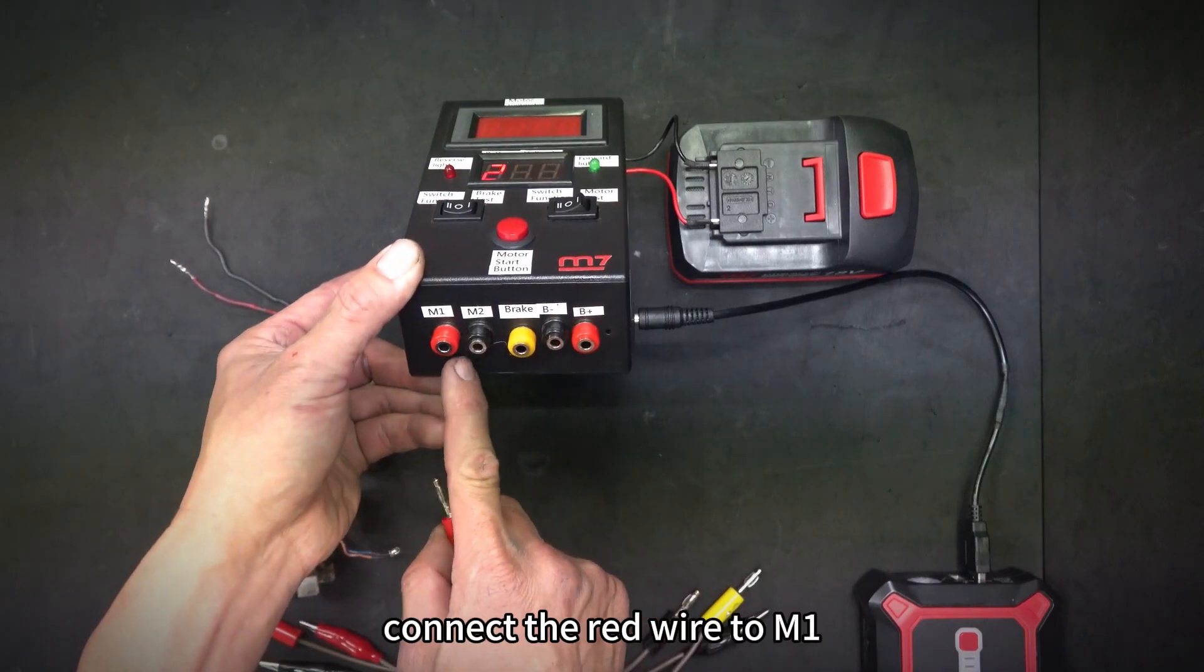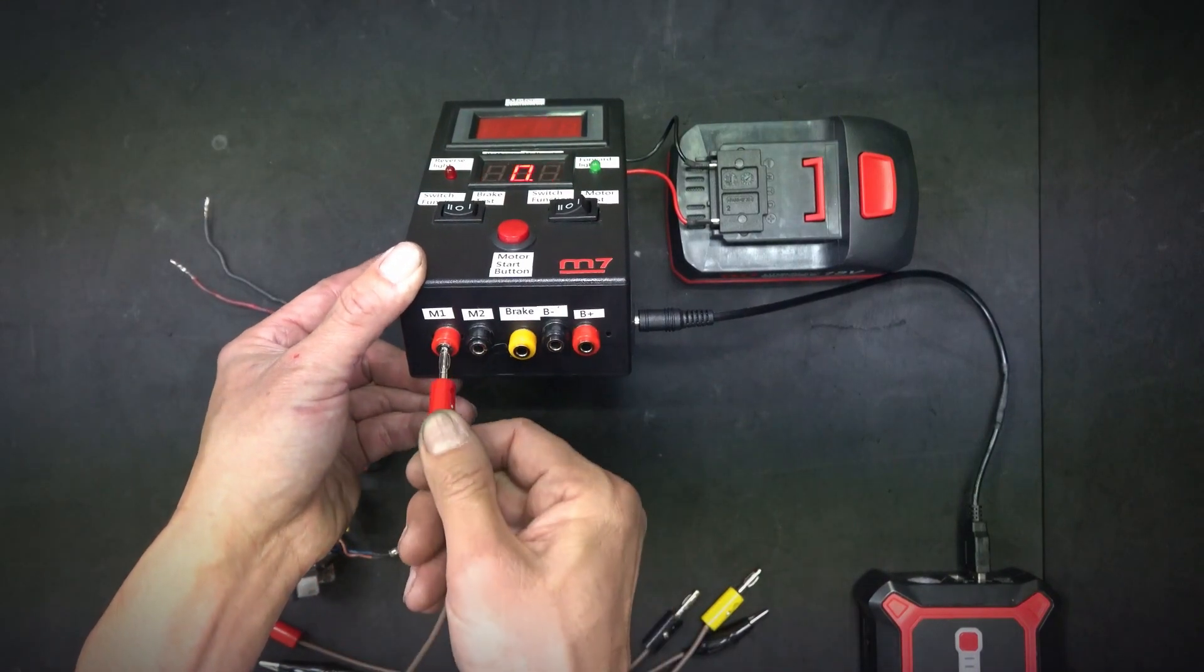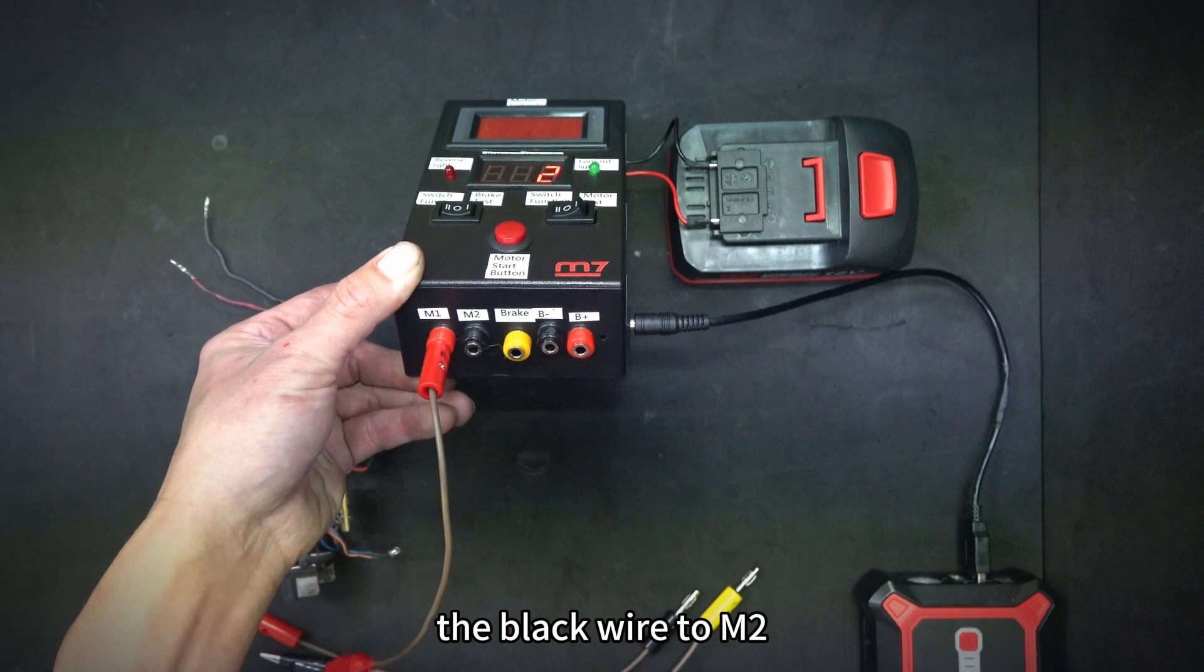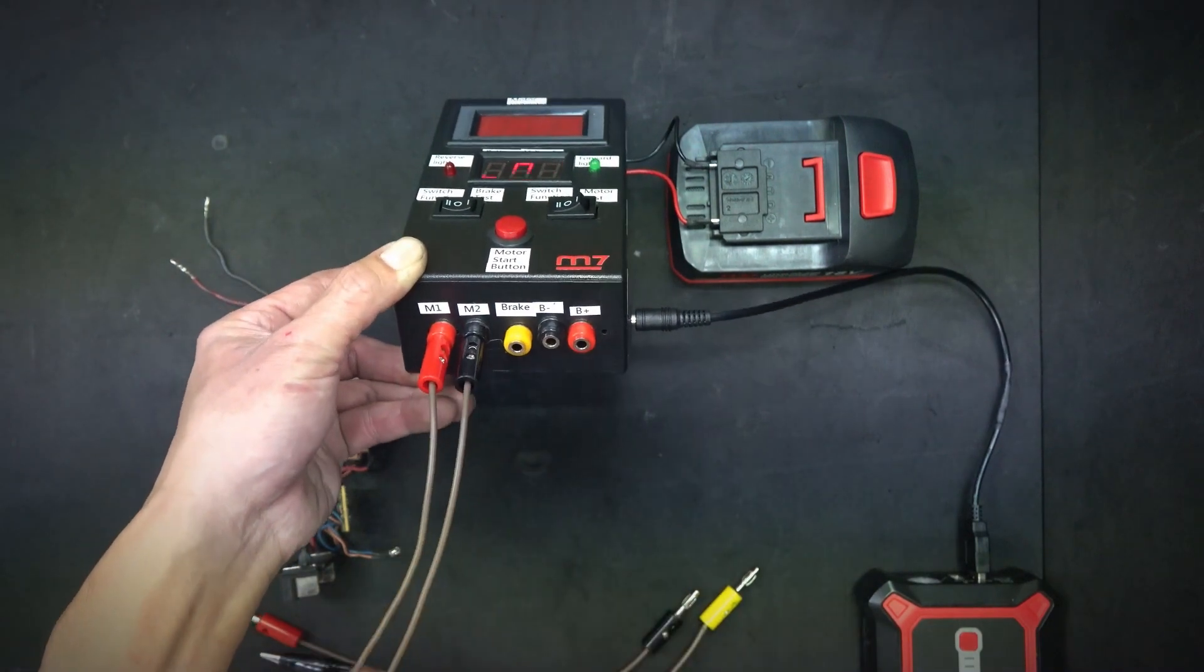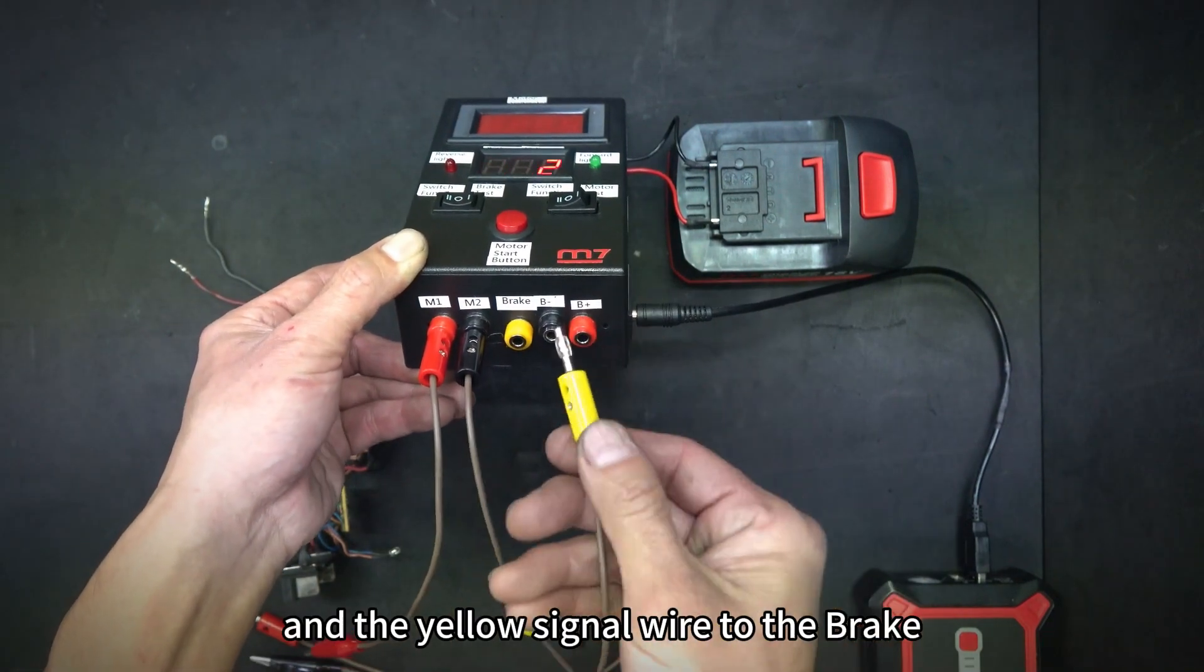Firstly, connect the red wire to M1, the black wire to M2, and the yellow signal wire to the brake.